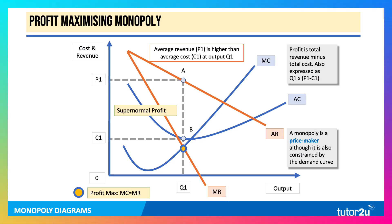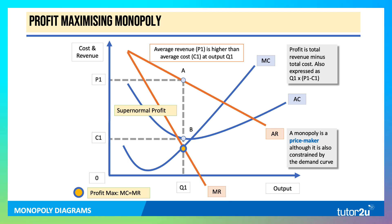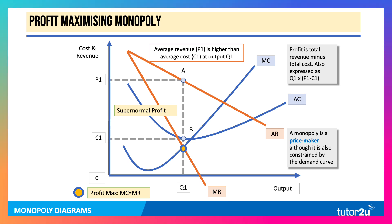Here's a profit-maximising monopoly. Monopoly is a price maker — they face a downward sloping demand curve, although the firm is constrained by the position and elasticity of demand. They can charge the price P1 at an output Q1. The unit cost there is C1, so they're making monopoly profit P1, A, B, C1.